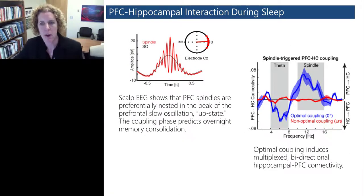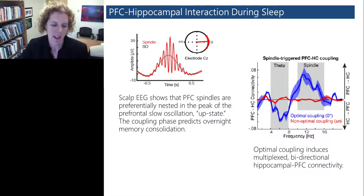Some new work coming out of Bob Knight's lab and work with Jacqueline has shown that this prefrontal hippocampal interaction during sleep is important for memory consolidation. What I'm showing here on the left represents in red a spindle. This is a spindle that was recorded in the prefrontal cortex and showing that it occurs or it's preferentially nested on the peak of a slow oscillation recorded through EEG. The slow oscillation represents the upstate. What they demonstrated was that this coupling phase, the precise phase synchrony of the spindle with the slow oscillation predicts overnight memory consolidation.